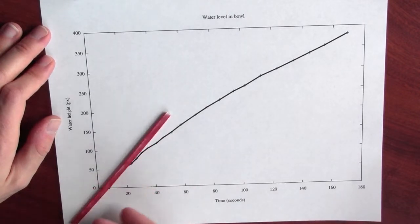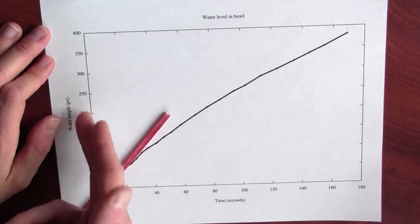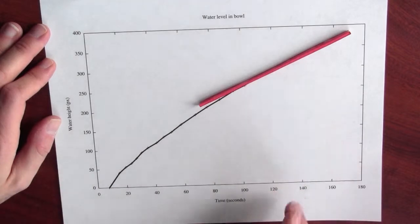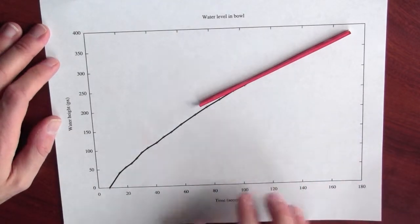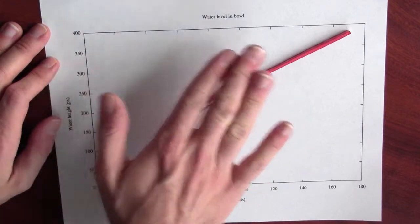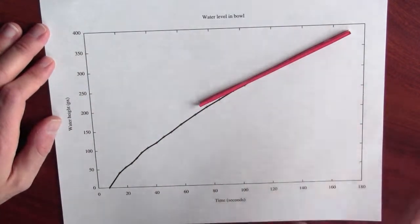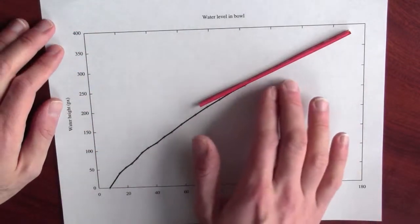And initially, this slope of the tangent line is quite high because the water height is increasing very rapidly. But after a while, because there's the same change in volume during this entire process, the change in the water height is less dramatic. It's the same amount of water coming in, but the water is moving up the sides of the bowl less quickly.